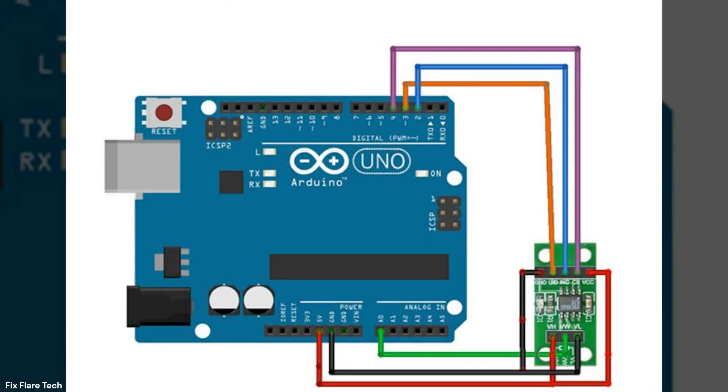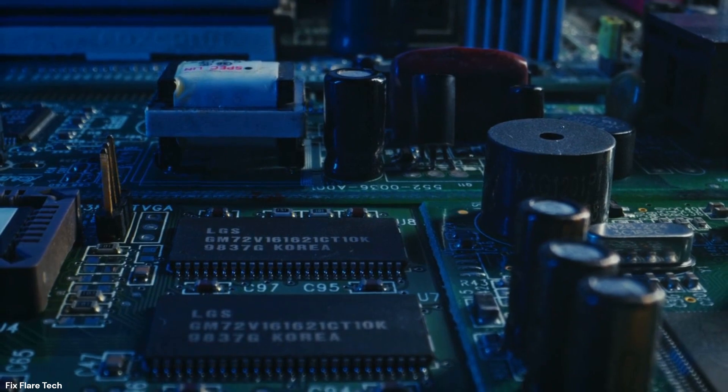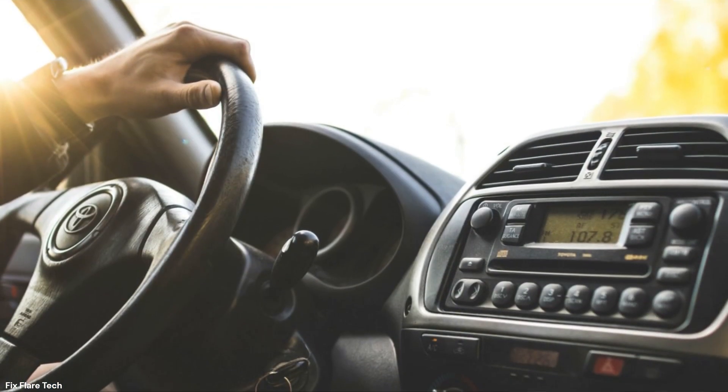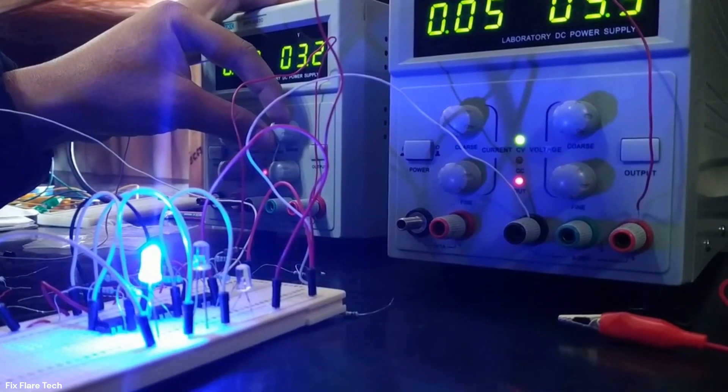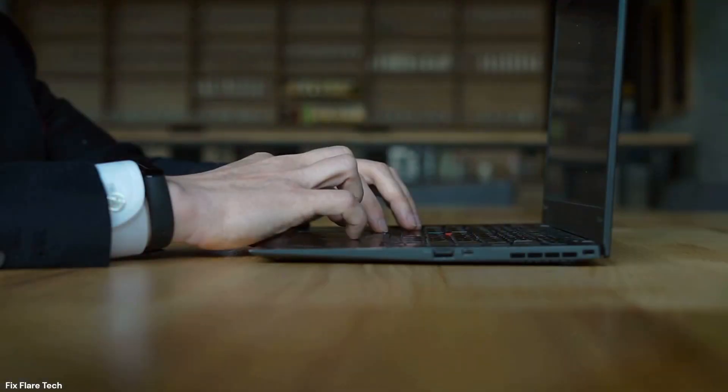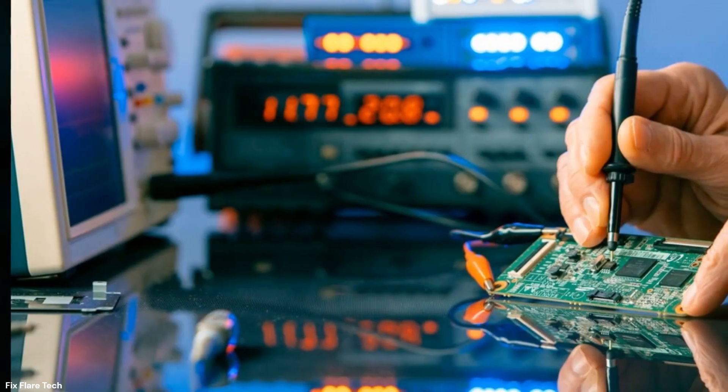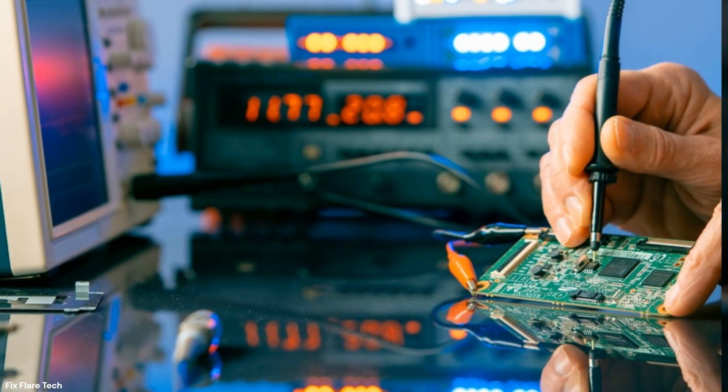You'll find these digital potentiometers in a variety of electronic devices, from your TV remote to your car's stereo system. They're the unsung heroes working behind the scenes to ensure your devices perform just right. Understanding how they function not only demystifies your everyday gadgets, but also lays a strong foundation for anyone keen on venturing into electronics.